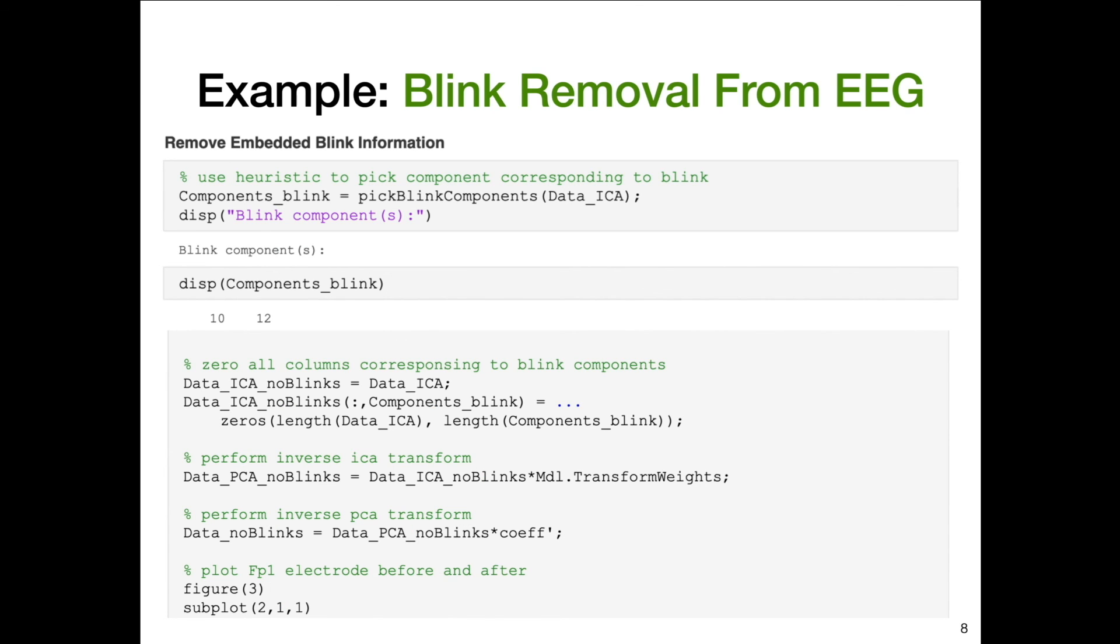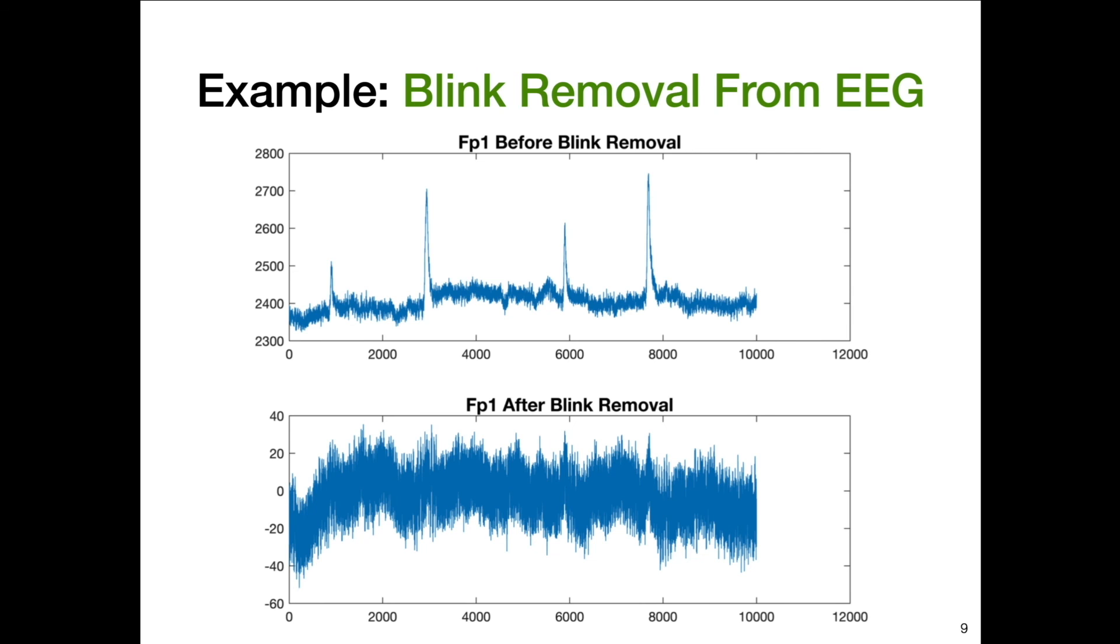We can essentially just drop independent components 10 and 12 because they contain blink information, which we're not interested in. We only want brain information. We can drop those two components and then just work backwards. We'll reconstruct our score matrix, basically the output of PCA. And then we can reconstruct our original 64 variables by going backwards in PCA. Doing that and plotting everything before the blink removal, FP1 had these four prominent peaks corresponding to blinks. And then afterwards, they went away.